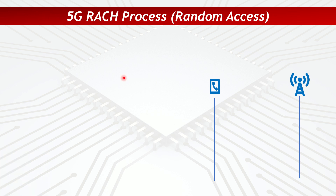Today we are going to talk about the 5G RACH process and random access process. Many of you have asked me to cover this topic and it is also one of the top 5G interview questions. In 5G, the RACH process is especially important — in NSA, a 5G RACH failure is actually a 5G call drop. By the end of this video you should know how to troubleshoot major RACH process failures.